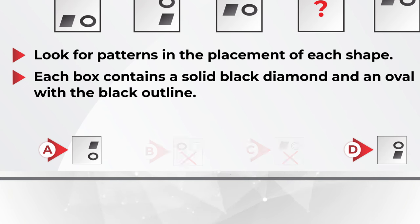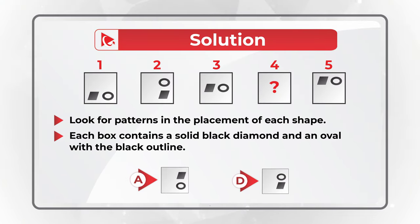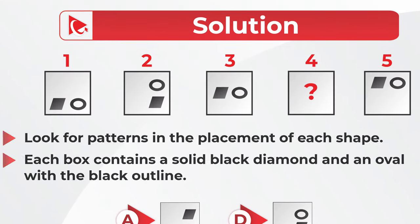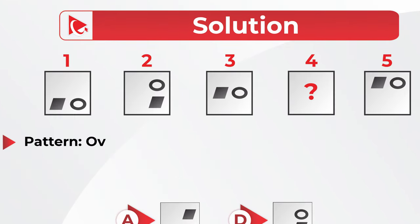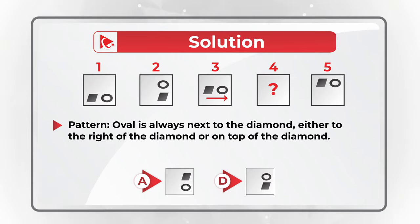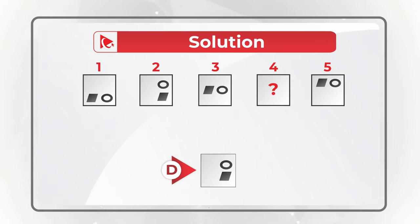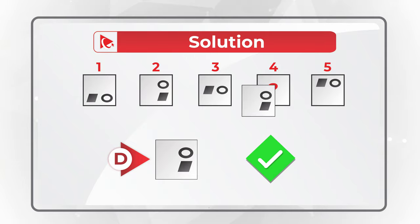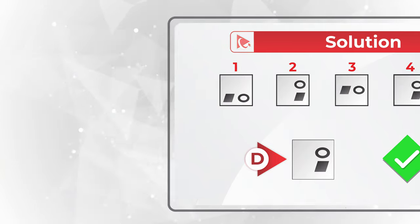We can safely assume that square 4 will have similar shapes inside, which automatically excludes choices B and C, leaving only choices A and D as possible answers. To solve this puzzle, we need to detect a second pattern: the oval is always next to the diamond, either to the right of the diamond or on top of the diamond. Based on this, the correct choice is D.